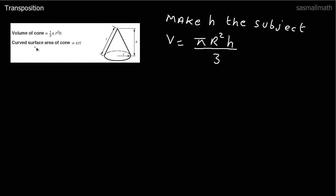Now we've got these two formulas for the cone — and again you don't need to remember these, they'll be on the formula sheet in the exam. Volume of a cone is one third pi r squared h. It's a good way to recognise that the third is being divided by 3. We're going to make h the subject — finding the height of a cone. This would be a typical example if you're given the volume and the radius, since in this form the formula isn't much good — you've got to rearrange it for h.